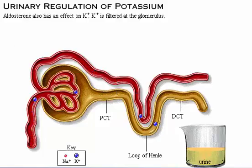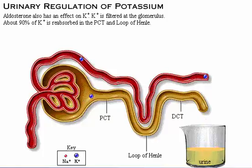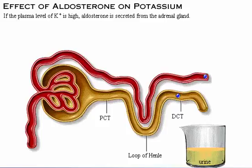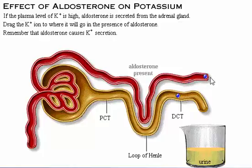Aldosterone also has an effect on potassium. Potassium is filtered at the glomerulus. About 90% of potassium is reabsorbed in the proximal convoluted tubule and loop of Henle. If the plasma level of potassium is high, aldosterone is secreted from the adrenal gland. Drag the potassium ion to where it will go in the presence of aldosterone. Remember that aldosterone causes potassium secretion.